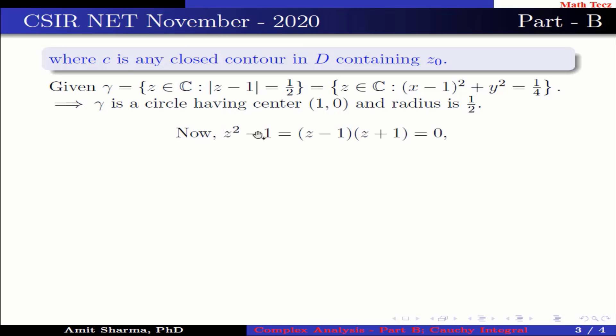Now z square minus 1 can be written as (z minus 1) into (z plus 1) which is equal to 0, implies z is plus minus 1, but only z equal to 1 lies inside the circle gamma.